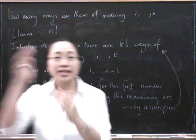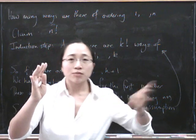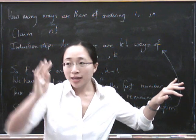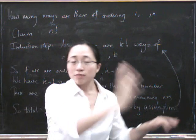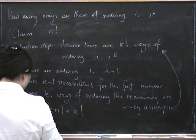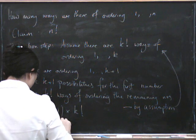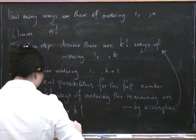Because k factorial is k times all the numbers lower than it. So if you then multiply that by k plus 1, you've got k plus 1 times all the numbers lower than it. So that's definitely k plus 1 factorial.